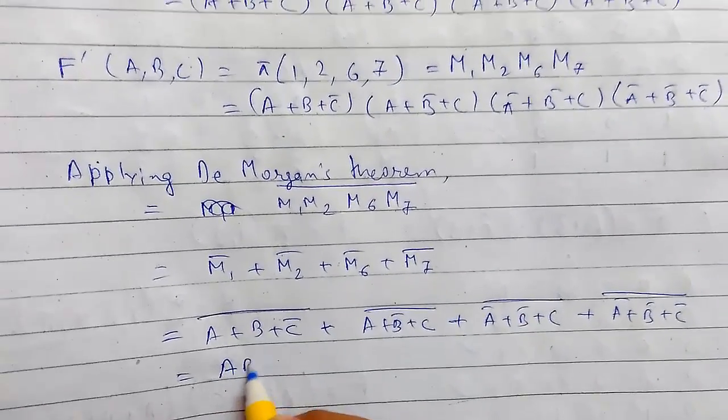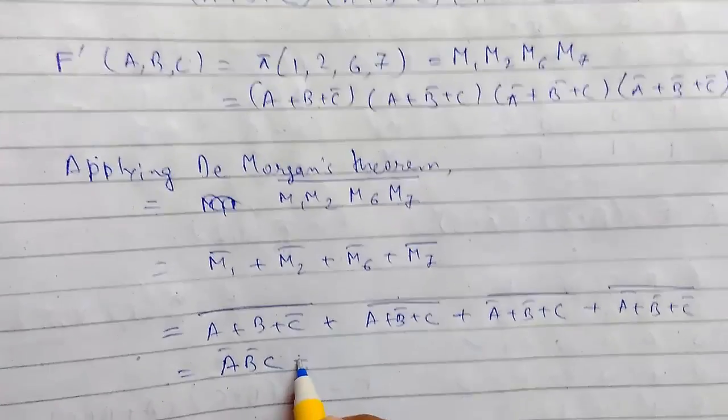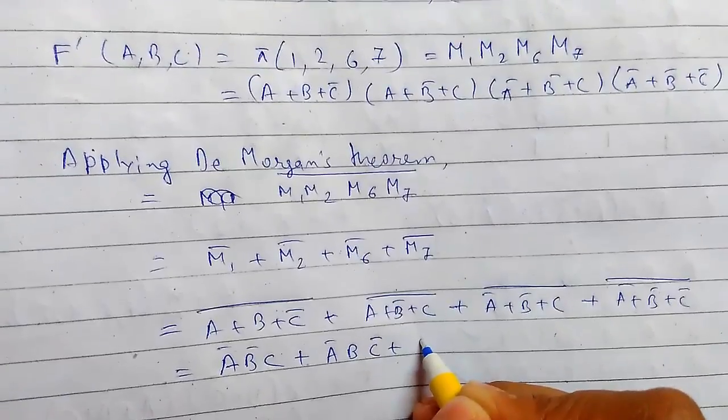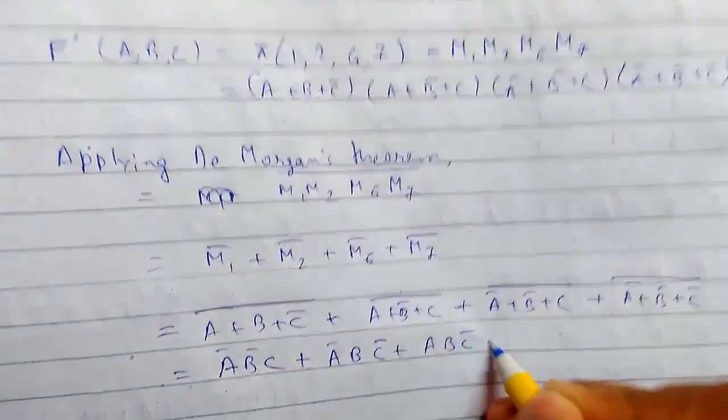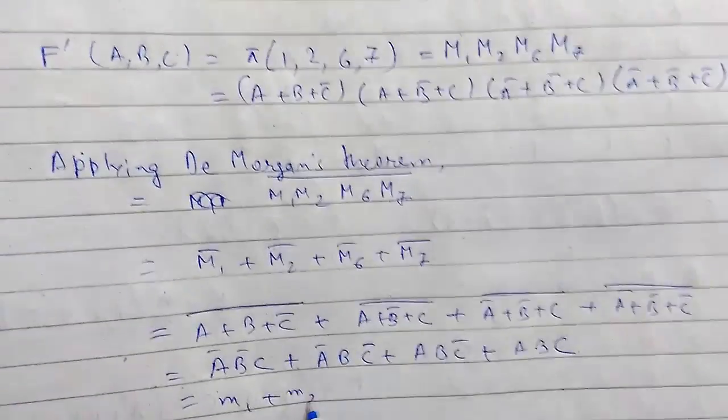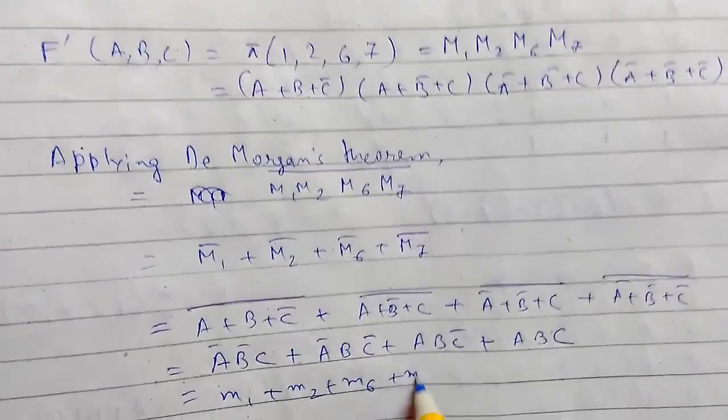It will be ABC, A bar BC bar, ABC, ABC. This is M1, this is M2, this is M6, and this is M7. Finally we see we have converted this.